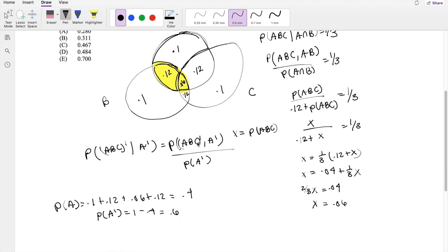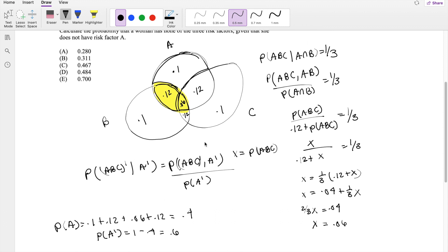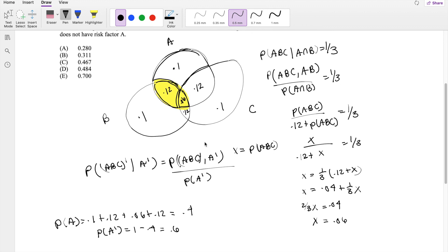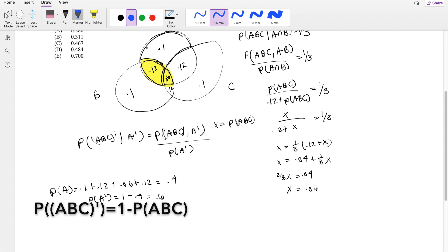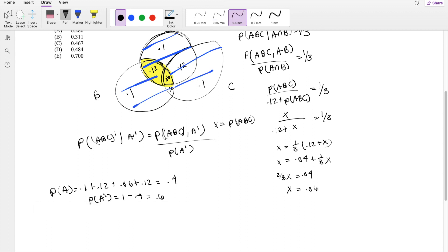And the numerator, the probability that it's not A, B, C and not A would just be anything on the outside. So that's going to be this whole blue part right here. So that's basically saying probability of A, B, C equals probability of A, which is 0.4.